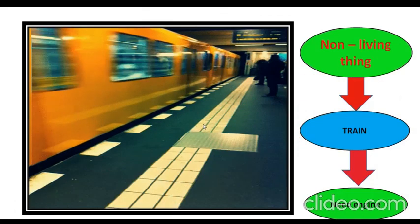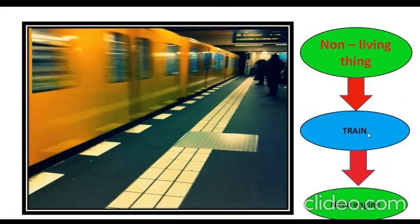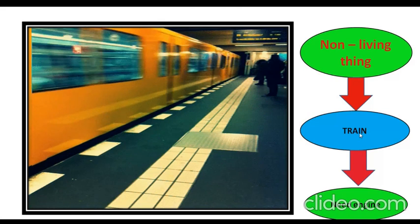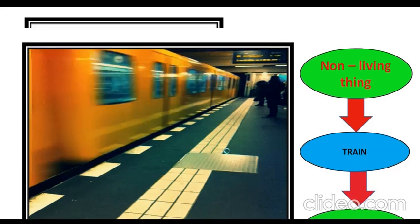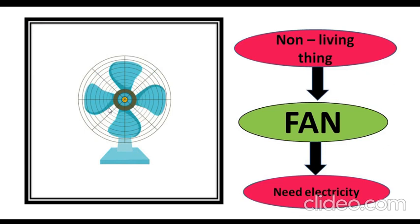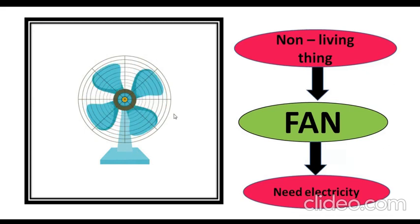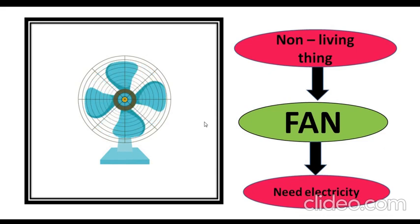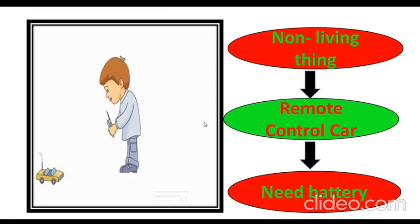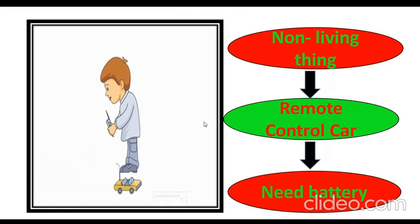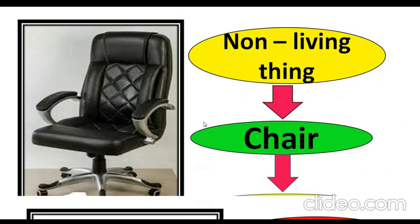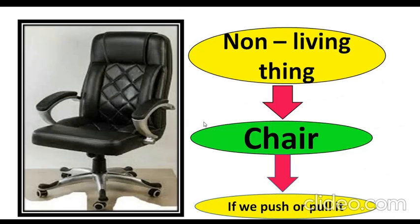This picture shows a train. Train is a non-living thing — an engine helps it to move. This picture shows a fan. Fan is a non-living thing — a fan needs electricity to move. Remote control car is a non-living thing — remote control car needs a battery to move. Chair — if we push or pull it, then it can be moved.